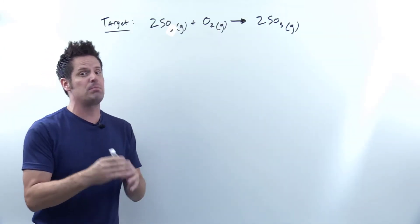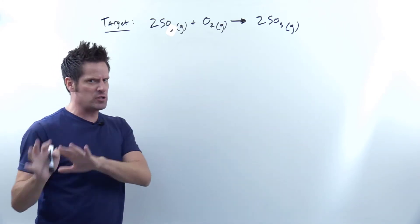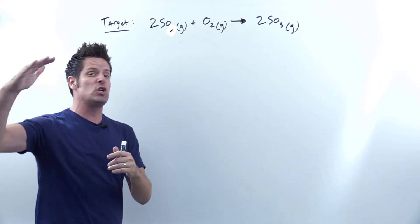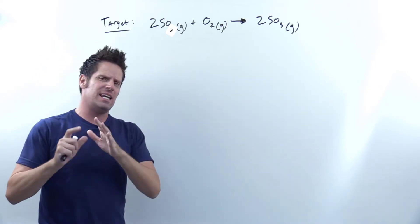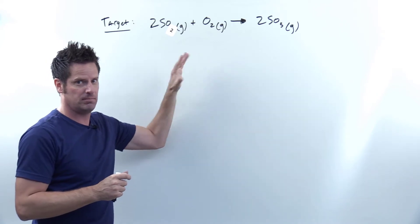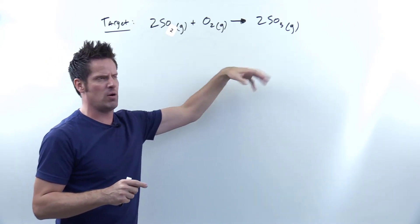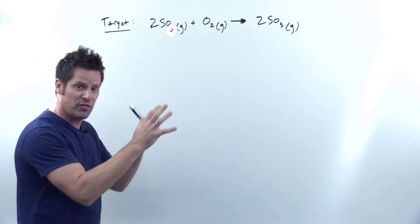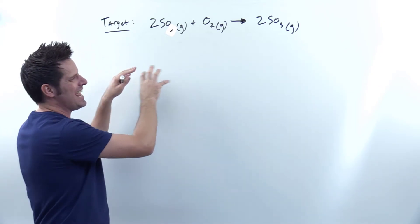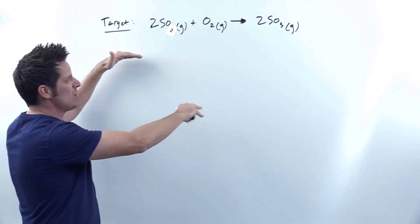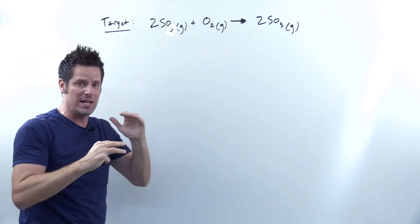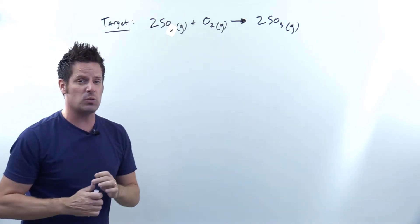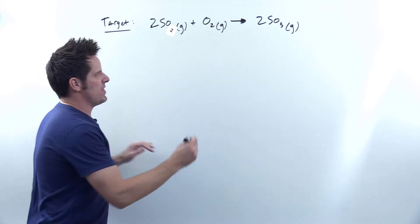The Hess's law approach is a little more complicated but in some circumstances is absolutely necessary. I'll show it so you understand the approach. It involves two steps: first, write down the heat of formation equation for each substance in the target equation as a full thermochemical equation with its delta H of formation. Second, take those thermochemical equations and manipulate them mathematically so they add up to give the target equation, then sum the accompanying delta H values.